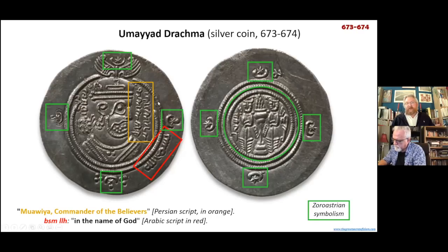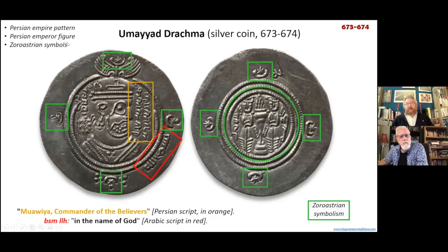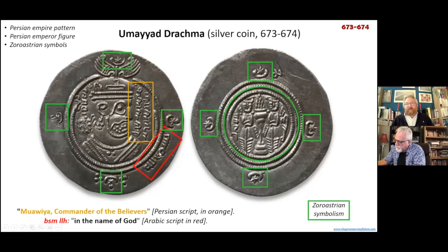We have other coins in the East also being minted with the Bismillah. This one is interesting because it has the name Muawiyah, 'commander of the believers,' written in Persian script. Even though Muawiyah is commander of the believers and claims to rule in the name of God, he still uses the Persian Empire pattern for his coins with the Persian Empire figure — not his own figure, but the Persian Empire figure. So still, this is not Islam, even though he is commander of the believers and rules in the name of God.